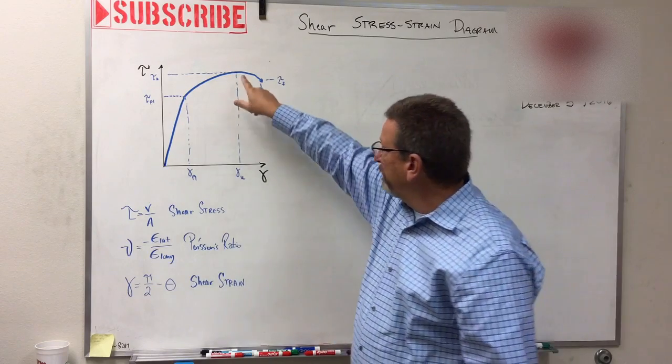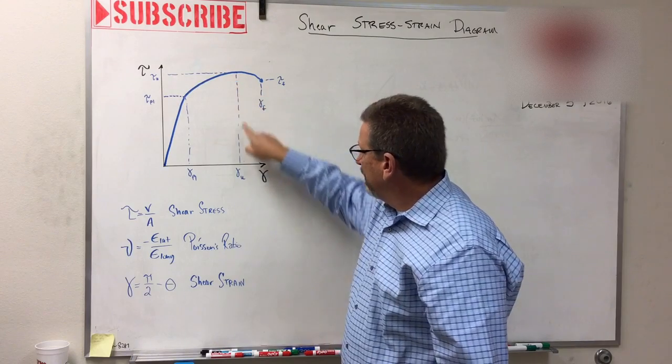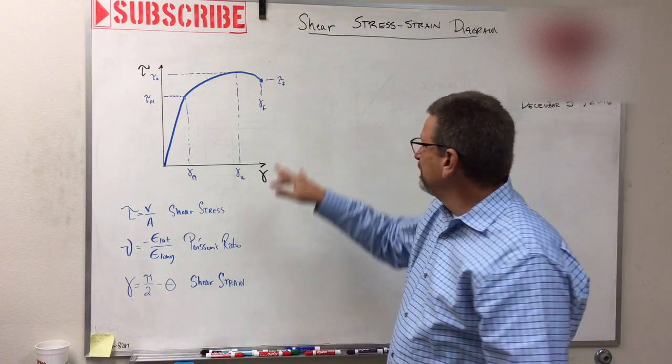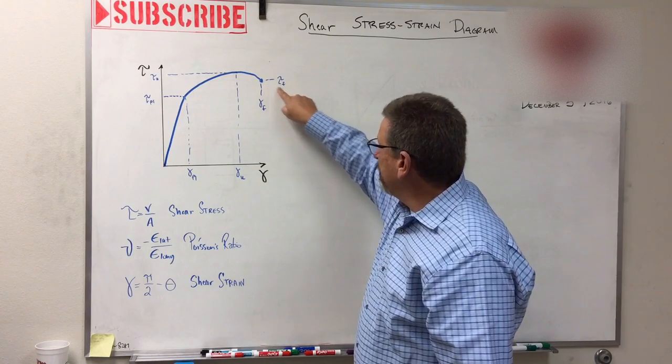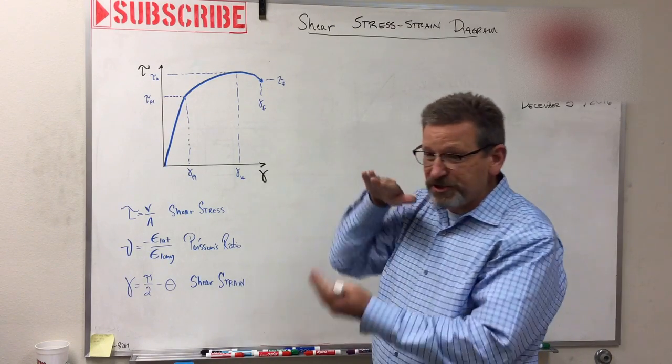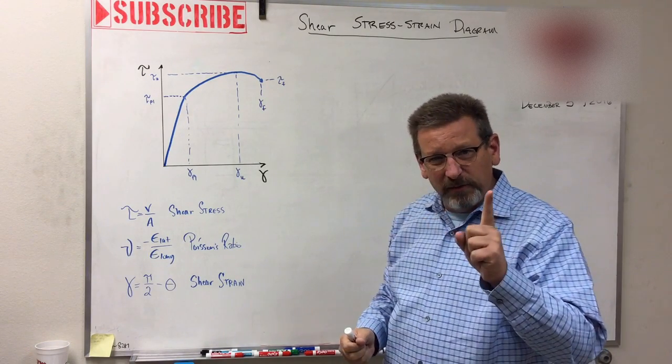And then just like on the other graph, up here at the top you have an ultimate stress. So this is the ultimate shear stress and this is the ultimate gamma—that's the most it can take before it breaks. And then this over here—what is the F for? Fracture. I'm going to shear it so hard that I'm going to fracture the material at that point.